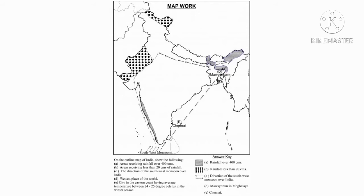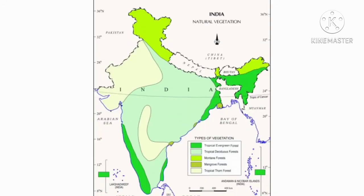Next, natural vegetation and wildlife. First of all, let us locate the vegetation type on the map. We studied about the five types of vegetation in India. First one, tropical evergreen forest. This dark green color indicates the tropical evergreen forest — you can see it in the southwest part of India and northeast part of India.